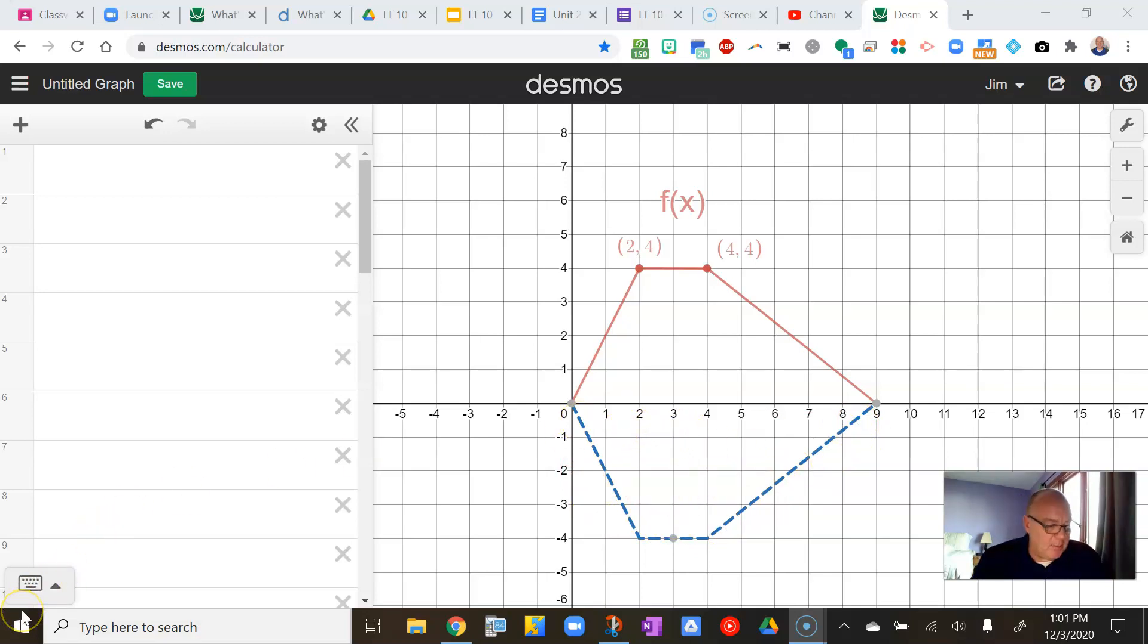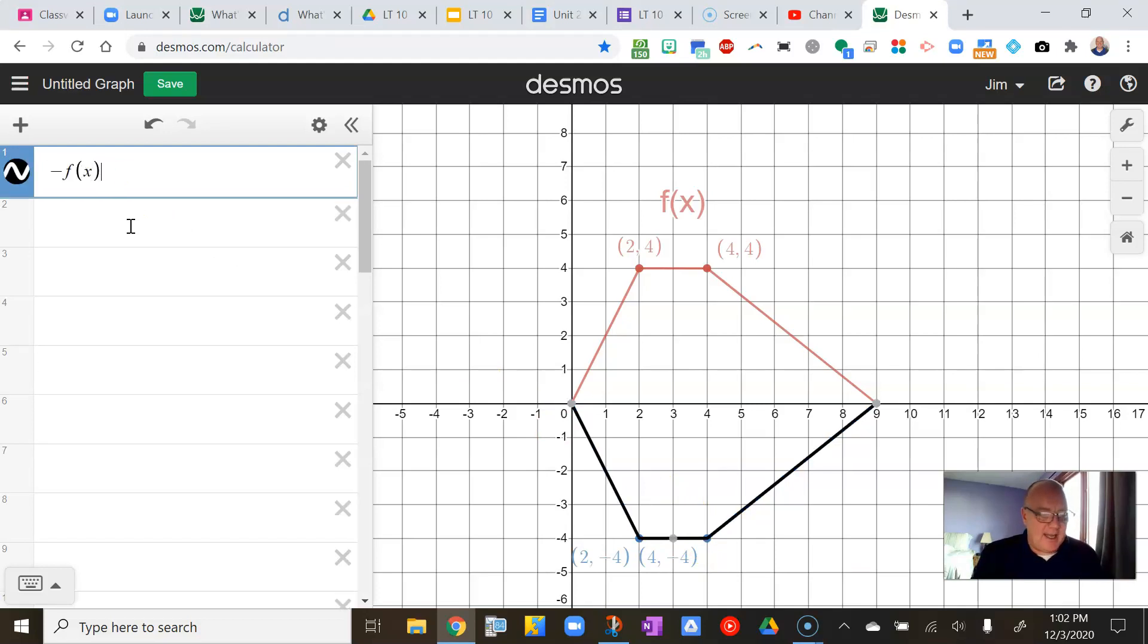And we can also see by looking at the points, we can see that the point 2, 4 has now become 2, negative 4. And the point 4, 4 has now become 4, negative 4. So what's actually happening here? Well, what's happening is the y-coordinates or the outputs are being negated. The 4 has become a negative 4. So since I'm negating the outputs, I can negate the entire function, f of x. And what I end up getting is that reflection, that reflective graph. So if I'm reflecting about the x-axis, I can simply negate the entire function, and it flips all of these points about the x-axis because the y's become negative.